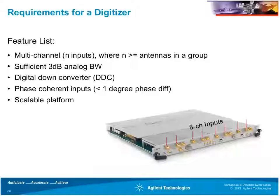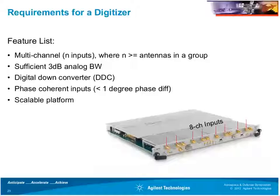Phase-coherent inputs are critical: the digitizer needs to achieve lower phase variance between channels than what you'd expect to measure in the antenna. If the digitizer's contribution exceeds your measurement margin, you won't get accurate measurements — that's a very important characteristic when selecting a digitizer. Ideally, the platform should also be scalable: as antenna element counts grow in the future, you can add more digitizers to make more measurements in parallel, providing value for a growing system.